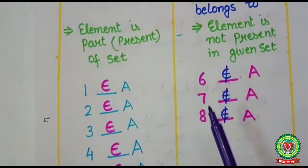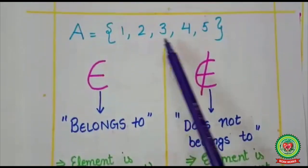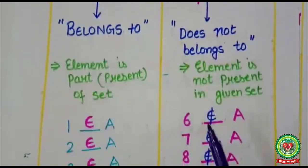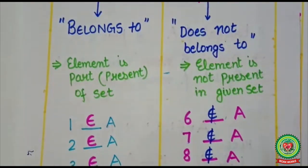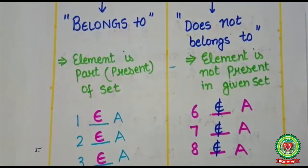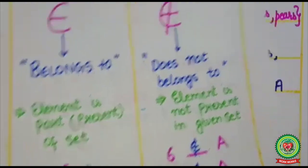On the other hand, if I will take 6, 7, 8, these numbers are not present in given set. So I will use doesn't belong to sign. So here I will write 6 doesn't belong to A, 7 doesn't belong to A. Similarly 8 doesn't belong to set A.